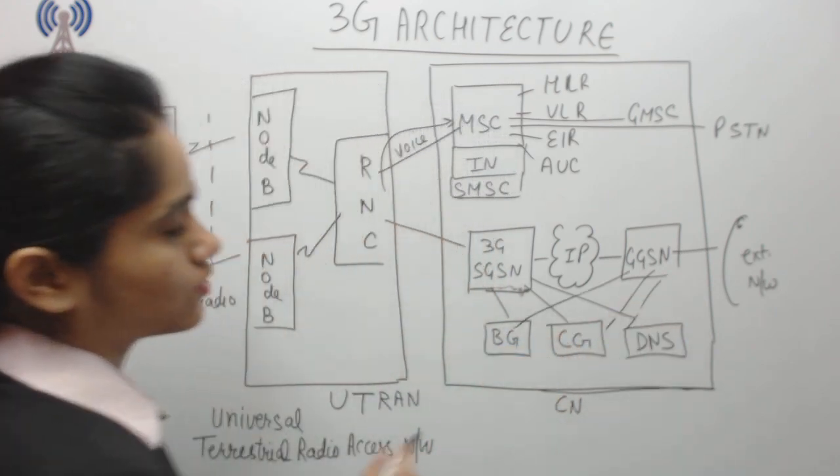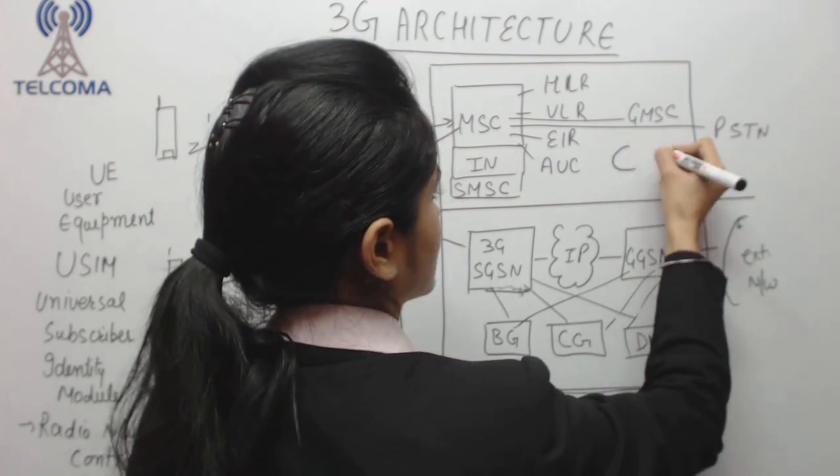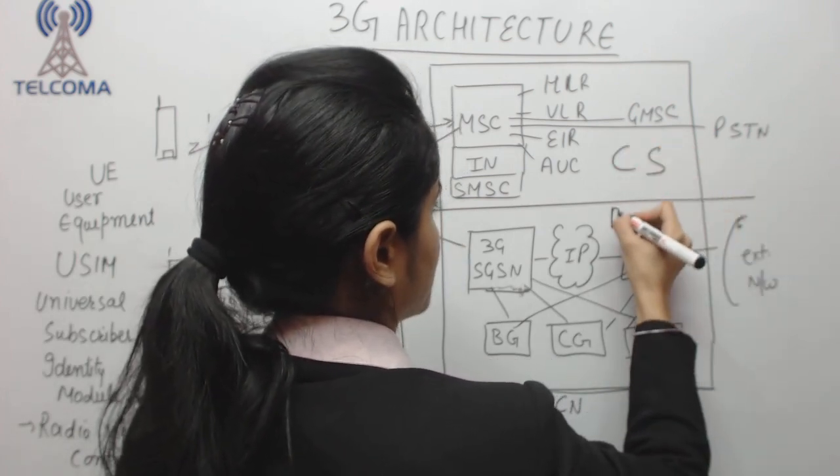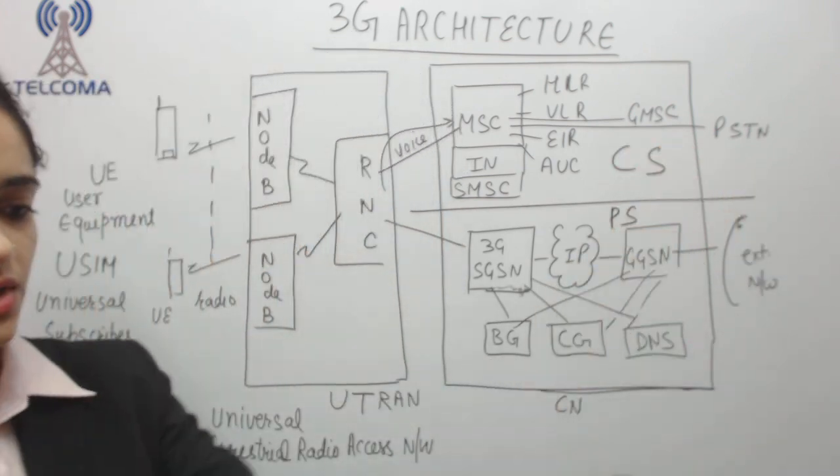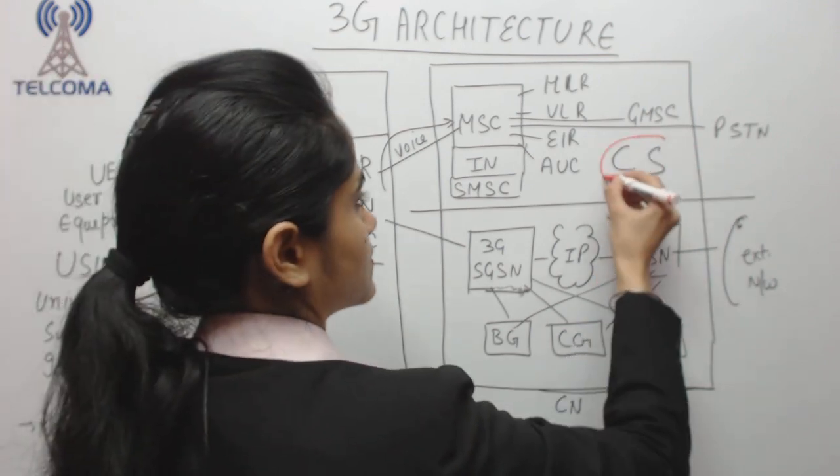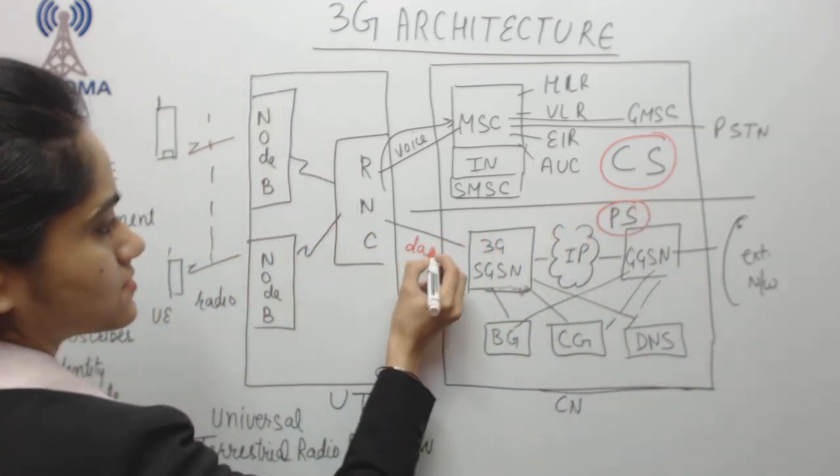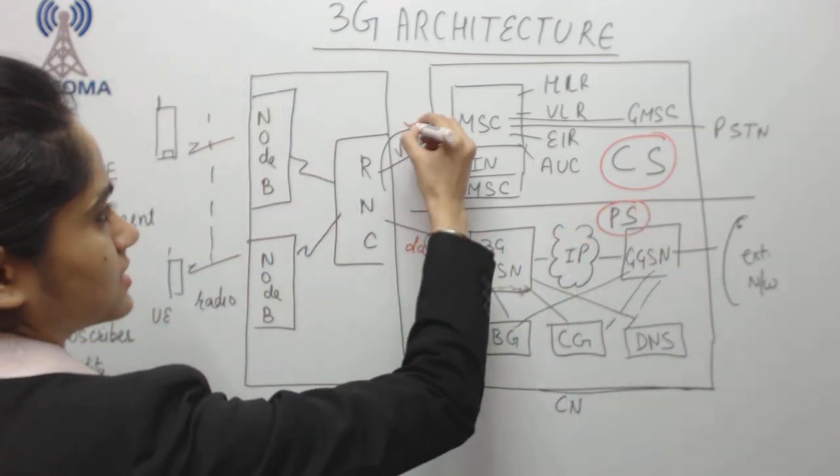So if I see the core network of 3G itself, it contains Circuit Switch network as well as Packet Switch network. This is a Circuit Switch network and this is a Packet Switch network. This path is for data whereas this path is for voice.